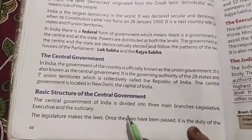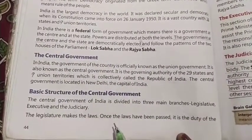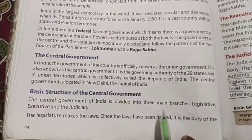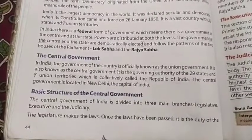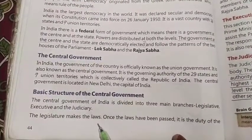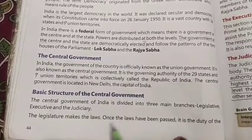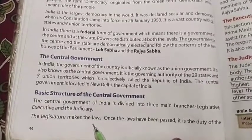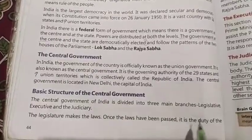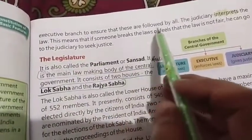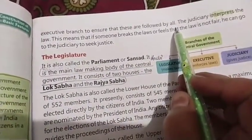The basic structure of the central government has three main branches: legislative, executive, and judiciary. The legislature makes law. Once the law is made in the legislature, it is the duty of the executive — the next branch — to ensure that these laws are followed by all.